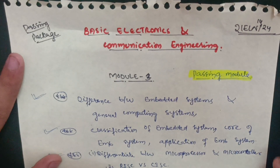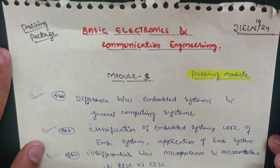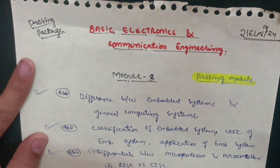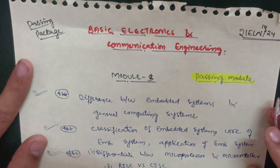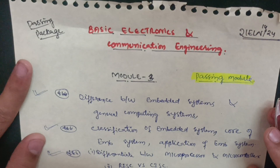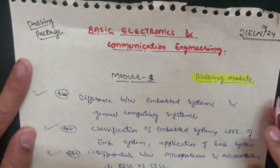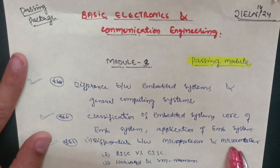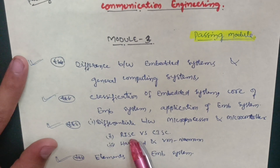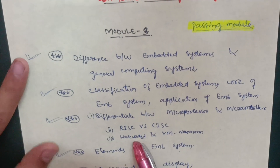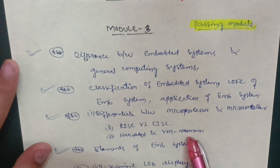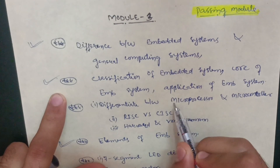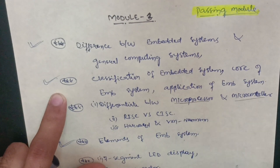There is a vast syllabus for this subject with two chapters in each module. I have taken some important questions for you — you can also cover only one part from each module. The next important question is to differentiate between microprocessor and microcontroller, and the differences between RISC versus CISC, and Harvard architecture. This is the most important question as far as the VTU examination is concerned, so you have to focus on it much more than the other parts.